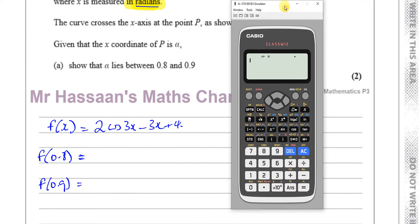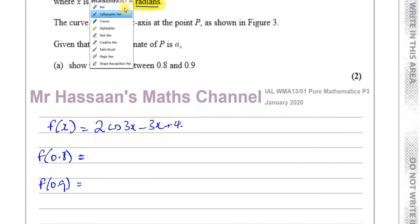Okay. So I'm going to put 2 cosine. So what I'll do is I'll write my steps here to make it clear. So I'll put 2 times cosine of 3 times 0.8 minus 3 times 0.8 plus 4 equals.